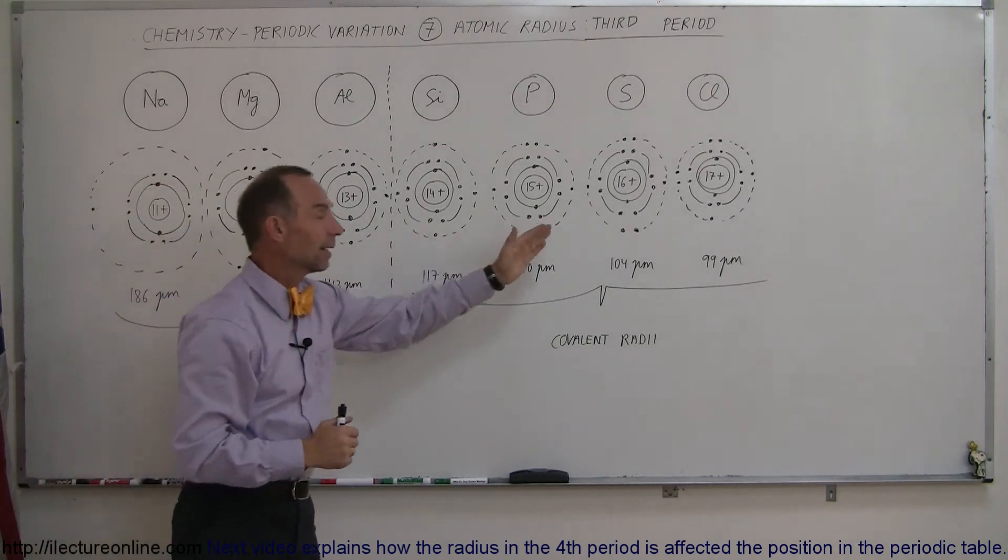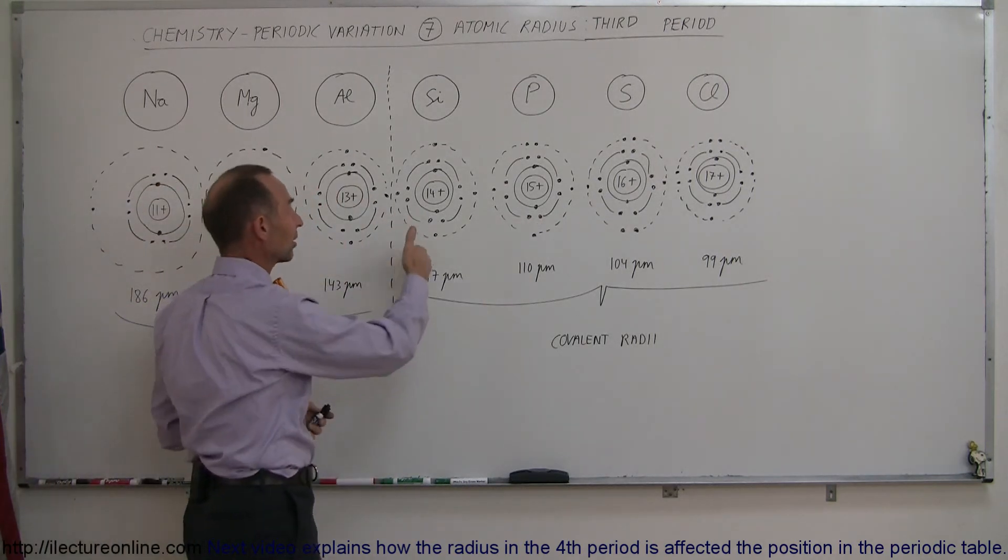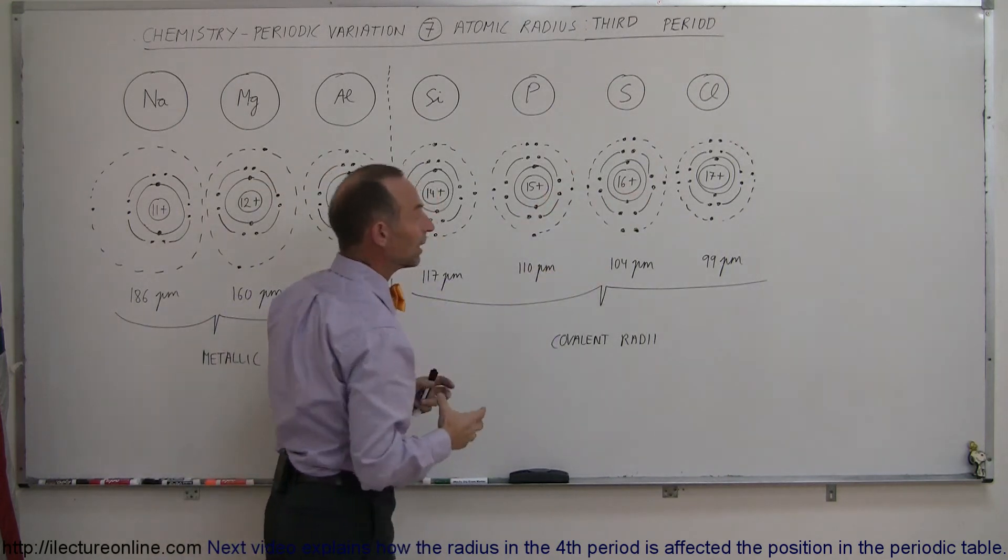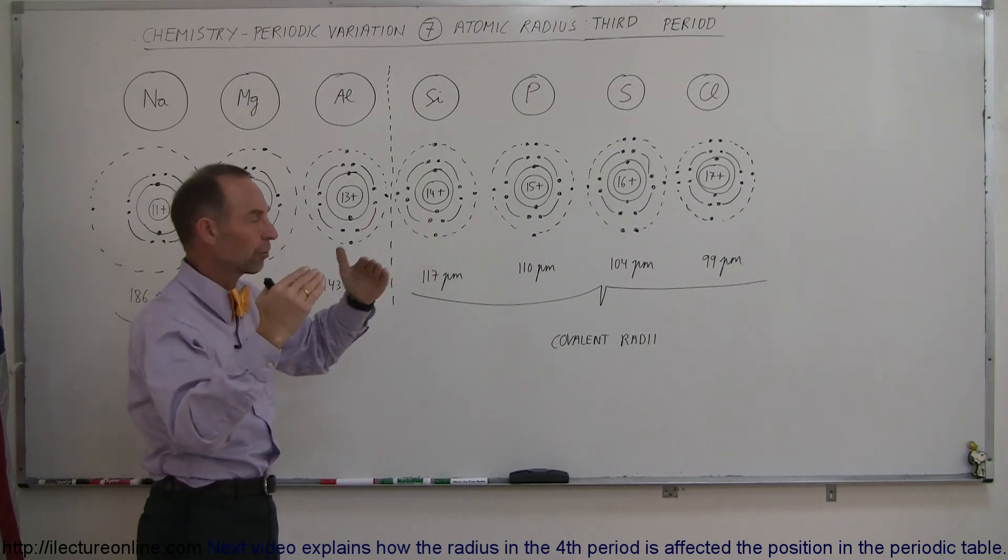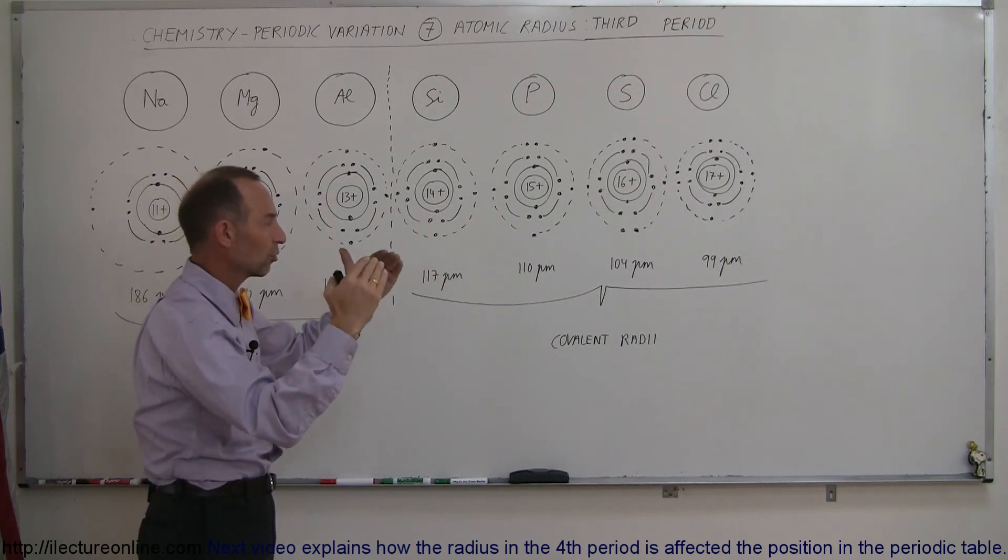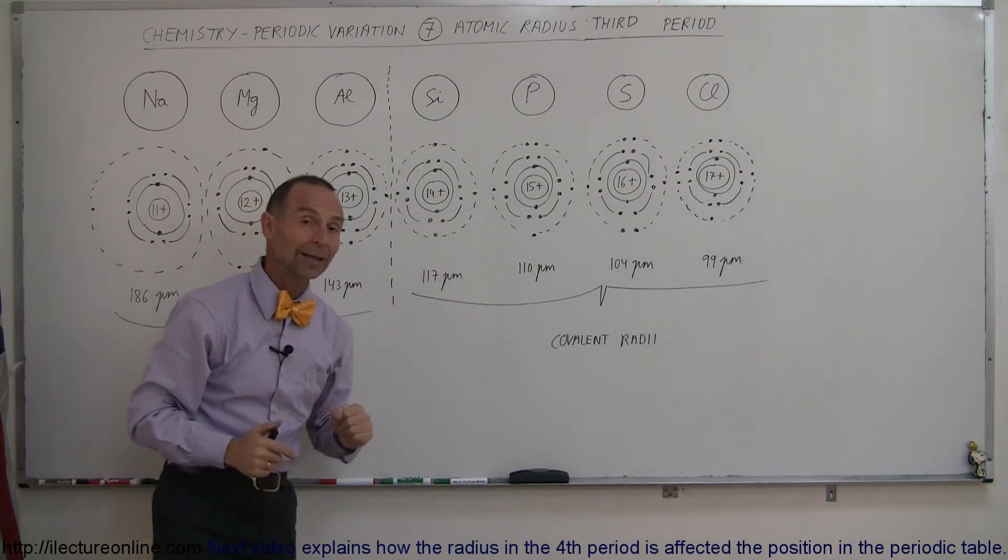And the same thing happens for silicon, phosphorus, sulfur, and chlorine. There's more and more positive charge in the nucleus, no additional screening, so therefore a stronger force of attraction and the atoms get smaller and smaller and smaller as you go to the right in the third period.